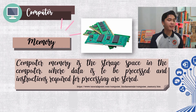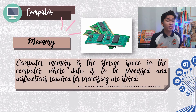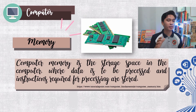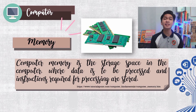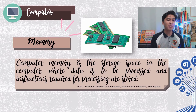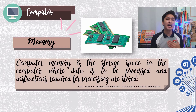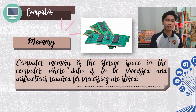Next, we have computer memory. Computer memory is the storage space in the computer where data is to be processed and instructions required for processing are stored. Memory is a temporary storage area which holds the data and instructions that the system unit needs.